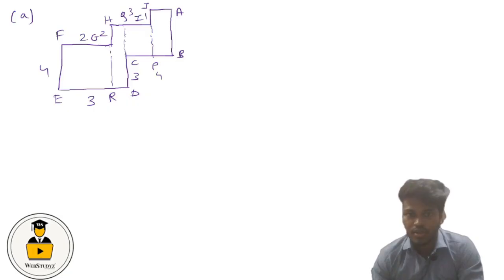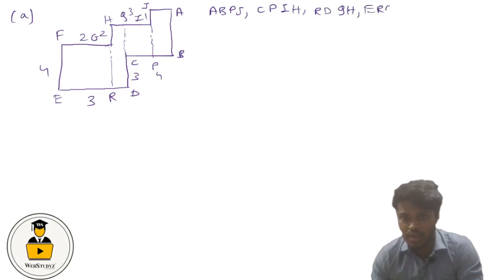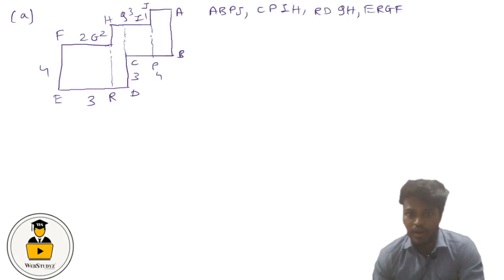After drawing this figure we can see that there are a total of 4 rectangles. The 1st rectangle is ABPJ, the 2nd is CPIH, the 3rd is RDQH, and the 4th is ERGF. In order to find the area, let us first find out the sides of these rectangles.